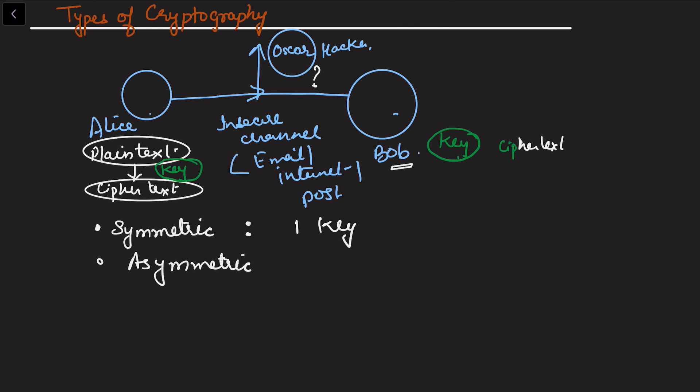Oscar received the ciphertext, and with the help of this key, Bob can get the plaintext. But the problem here is: how do we hide the key also? So this is another discussion point - how do they share the key so that Oscar doesn't know the key?